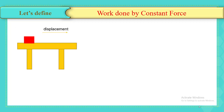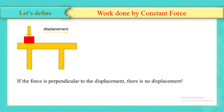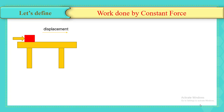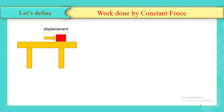To better understand this concept, let's consider the following example. We have a book on the left of a table and we want to displace it to the right. We have to apply a force. But if the force is perpendicular to the direction of displacement, there is no displacement and therefore there is no work. So if the force is perpendicular to the displacement, the work done by this force is zero. To displace the object, we have to apply a force parallel to the displacement, as shown here. If the force is parallel to the displacement, there is a displacement and therefore there is work.